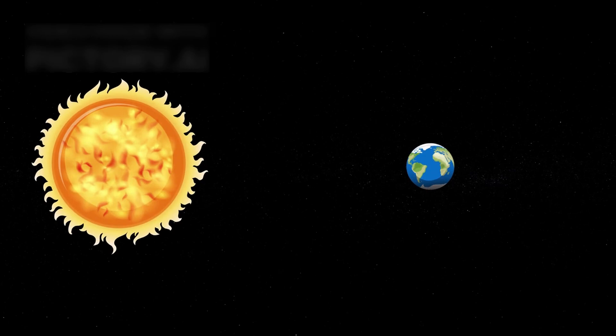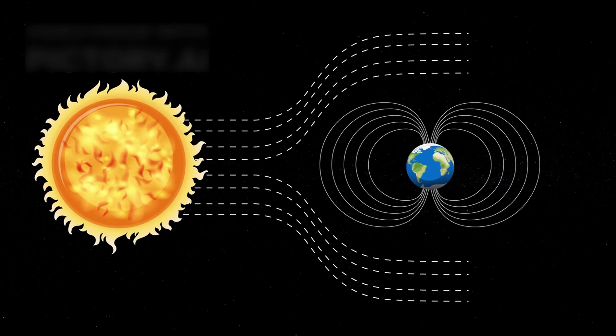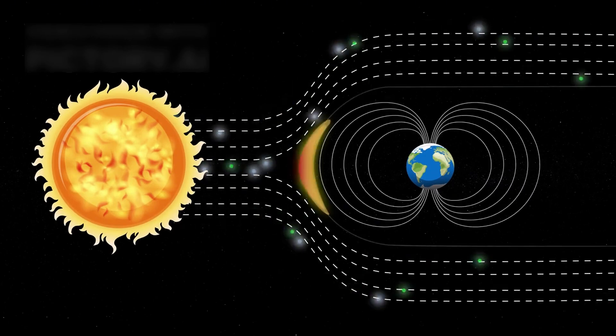Even as they left the planets behind, the Voyagers kept collecting data about the heliosphere and solar wind. Crossing the heliopause, the final edge of the Sun's influence, they entered interstellar space.